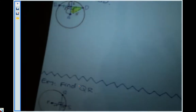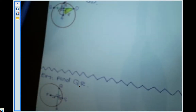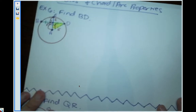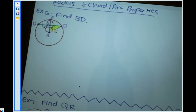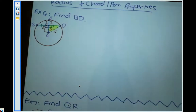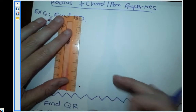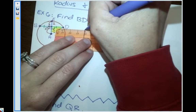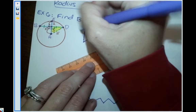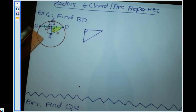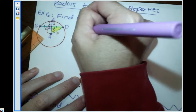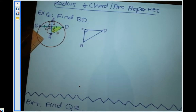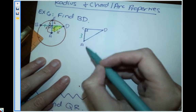I'm going to draw triangle ACD separately so we can see it more clearly. This triangle has the right angle at C, with side AC equal to 3 and hypotenuse AD equal to 5. We're solving for side CD.